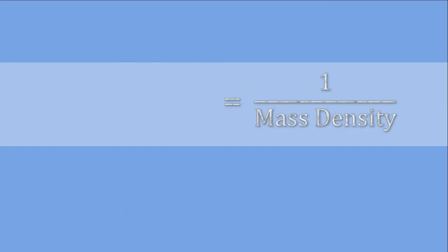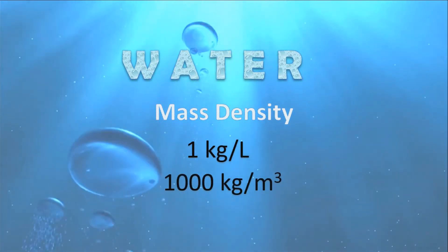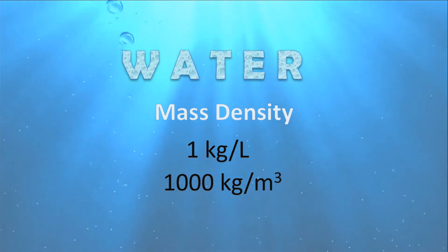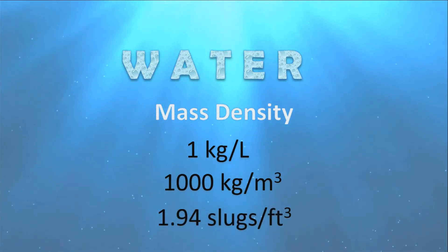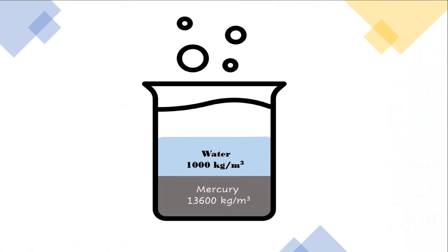The reciprocal of this formula gives the specific volume, which measures the volume occupied by a unit mass of fluid. For reference, water has a mass density of 1,000 kilogram per cubic meter (SI) or 1.94 slugs per cubic foot (English). Mercury has a mass density of 13,600 kilogram per cubic meter — heavier than water, so it sinks. Oil has a mass density of about 800 kilogram per cubic meter — lighter than water, so it floats.